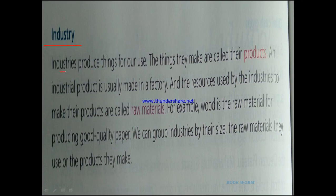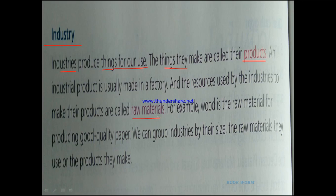Industries are basically places where things are produced for our use — goods are produced for our use. The items they produce are known as products. So if a factory makes a chair, then the factory is producing a product which is a chair. An industrial product is usually made in a factory, and the resources used by the industry to make these products are called raw materials. For example, this chair factory needs wood to make the chairs, and this wood is known as the raw material.